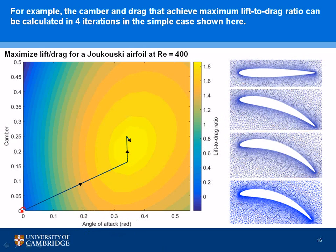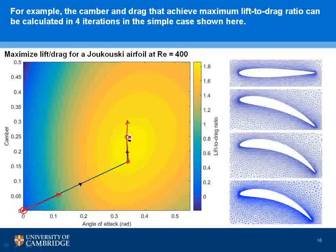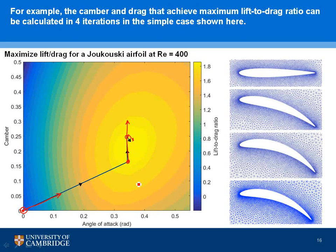This is a very fast way of finding the optimum. Starting from any point, we compute the direct solution and the adjoint solution, which gives the gradient. We move in that direction to another point, recalculate the direct and adjoint solutions, and repeat. The key point is that at every gradient evaluation we've done just two calculations — and that works whether we're using two things we can change or 200 things we can change. That's a brief summary of adjoint-based optimization.